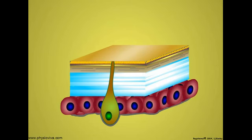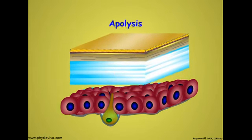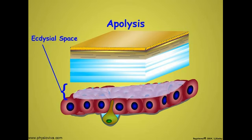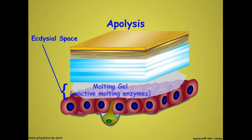The existing structural cuticle separates from the epidermal cells. This is termed apolysis. The resulting ecdysial space between the endocuticle and the epidermal cells is filled with a gel that contains inactive chitinase and protease enzymes.